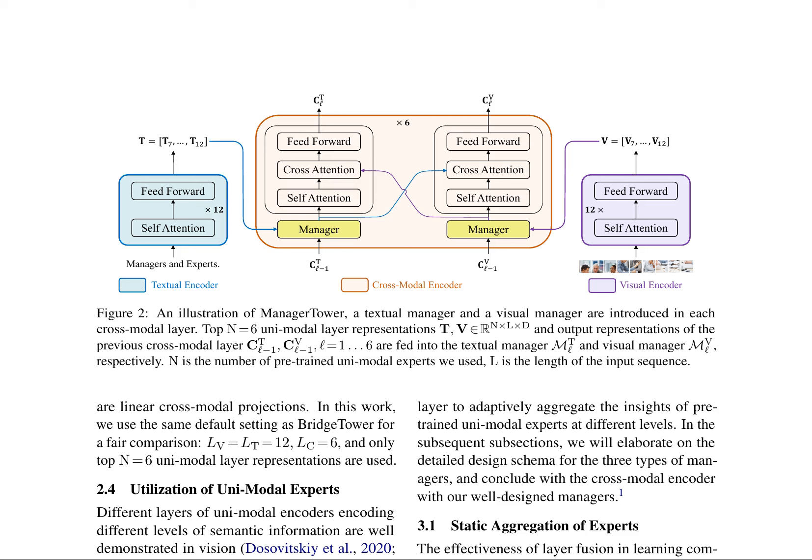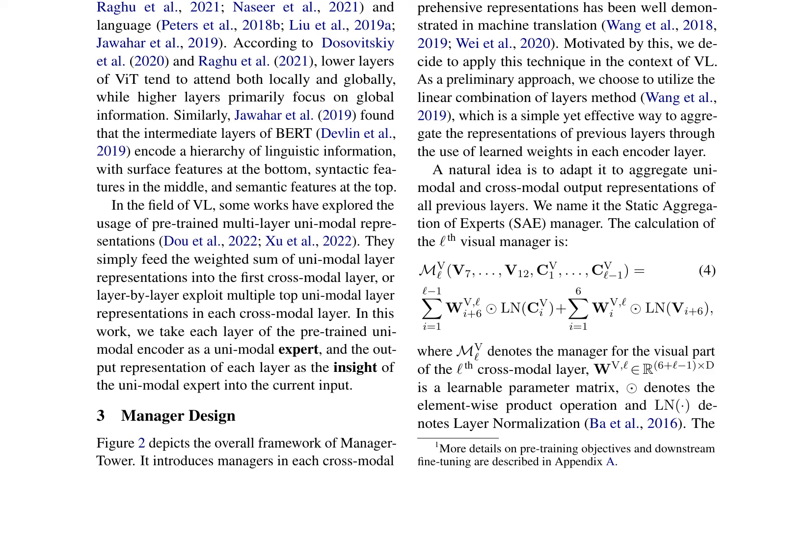The proposed Manager Tower model introduces a textual manager and a visual manager in each cross-modal layer to aggregate the insights of pre-trained unimodal experts at different levels. This approach utilizes the linear combination of layers method, a simple yet effective way to aggregate representations of previous layers through learned weights in each encoder layer. The calculation for the L-th visual manager involves using a learnable parameter matrix W and applying a softmax with a learnable temperature to normalize it. However, directly applying this technique, known as static aggregation of experts (SAE), does not bring the desired performance improvement compared to BridgeTower.